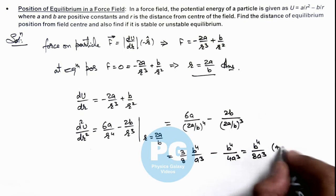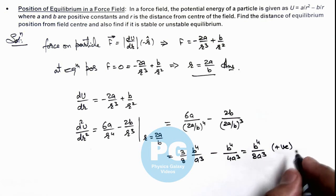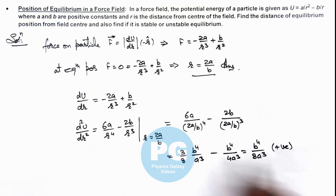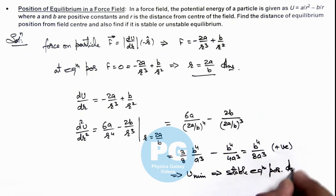The value is positive. If the second derivative of potential energy is positive, this implies U is minimum, which corresponds to a stable equilibrium position. That is the second answer for this problem.